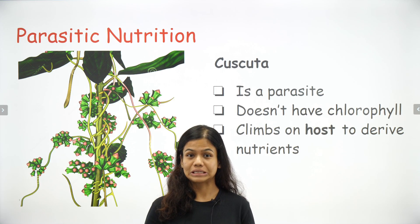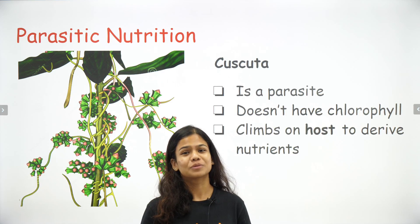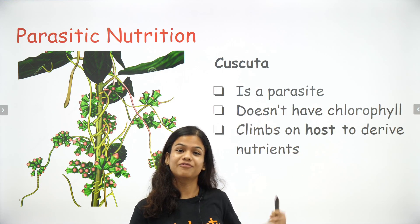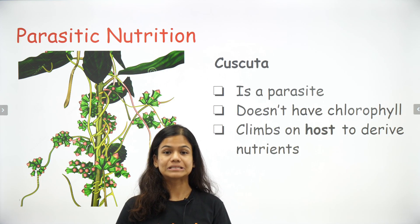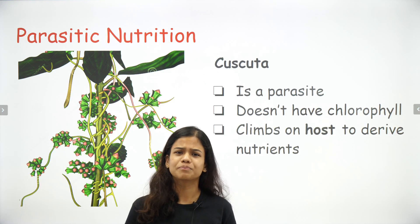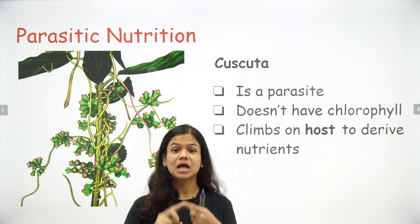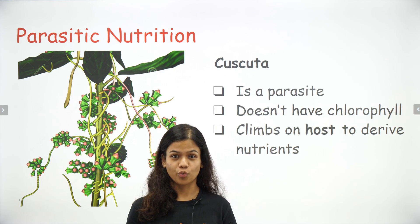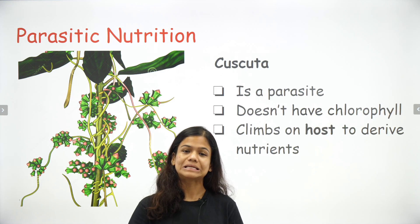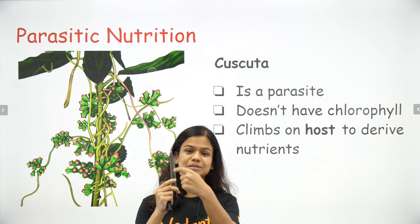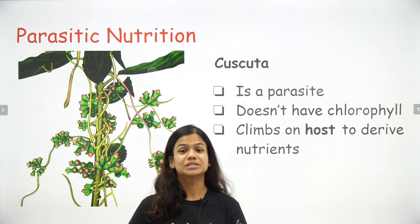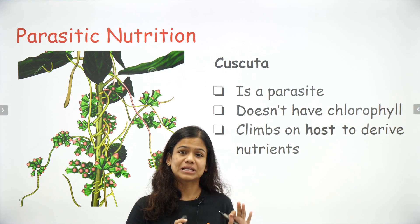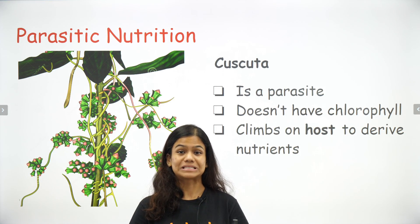The first mode of nutrition we're going to study is called parasitic nutrition. The example in your book is cuscuta — basically a parasite, a parasitic plant. Parasitic plants including cuscuta do not have chlorophyll, which means they don't have the green pigment so important to make food. Since it cannot capture sunlight, it cannot prepare its own food. What it does is entangle itself alongside a host plant and derive nutrients out of that host plant. It doesn't make its own food — it derives nutrients from the host plant. That is called the parasitic mode of nutrition.